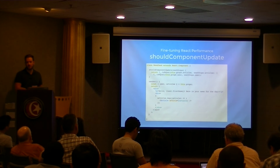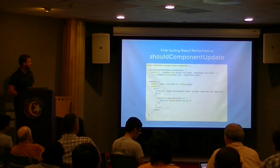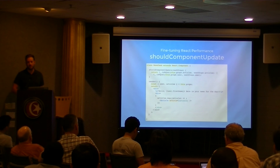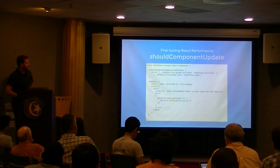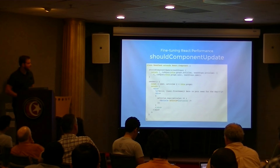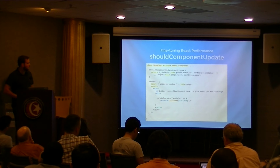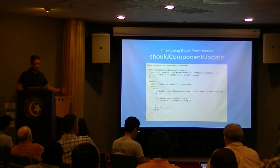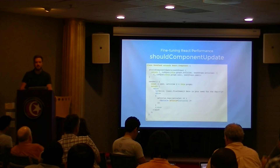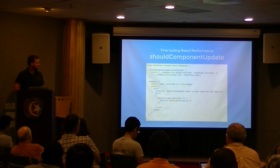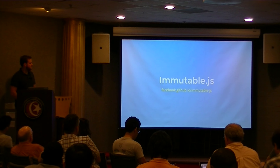One way to get really good performance is by using the shouldComponentUpdate lifecycle method in React. This lets you tell React specifically when you want a component to re-render. By default React renders every time props change, but with shouldComponentUpdate, returning true re-renders and returning false does not. It gives you the next props and next state that will be received, allowing you to perform checks. For example, using a deep equality check — if either props or state is not equal, re-render. But once you have lots of deeply nested properties, your performance will really suffer.